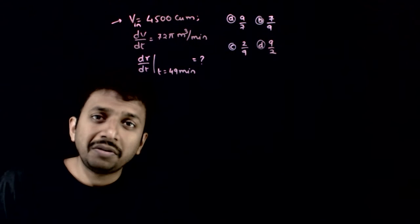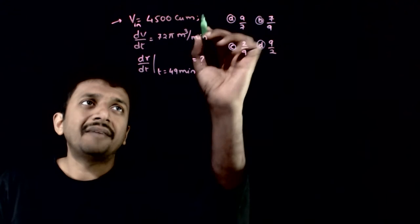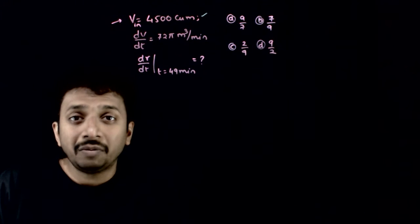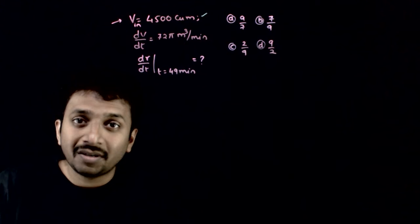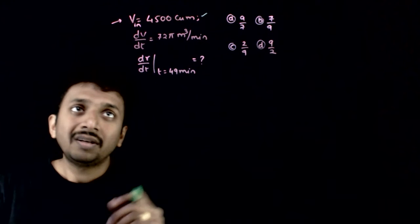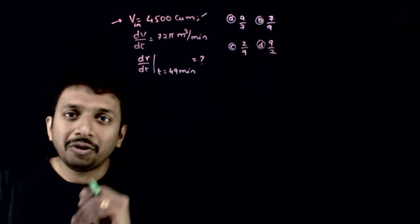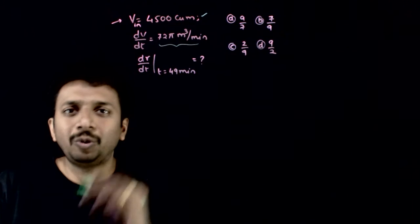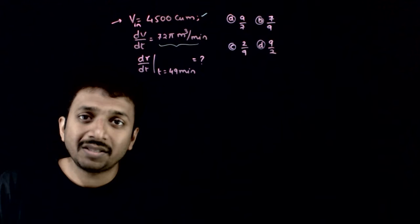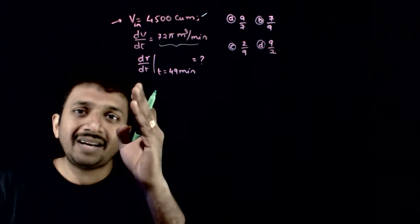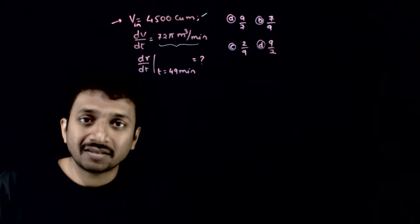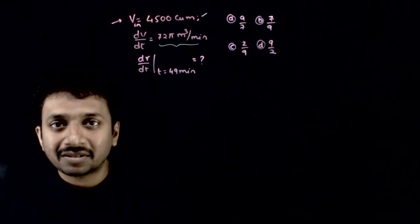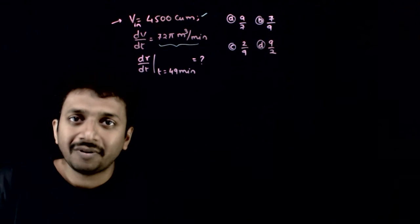Welcome students. In this question you are given a spherical helium balloon of volume 4500 cubic meters, and due to leakage, the rate at which the volume of air escapes is equal to 72π meter cube per minute. What is the rate at which the radius decreases when time is equal to 49 minutes — that is, after 49 minutes of leakage?